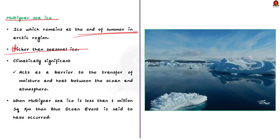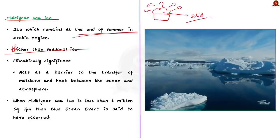Imagine you have a bowl of ice cream on a hot summer day. As the ice cream melts, it releases coldness into the surrounding air, making it cooler. The scoop that remains solid even after the other ice creams have melted acts like multi-year sea ice. It is thicker and takes longer to melt. It continues to release coldness and helps maintain a cool environment for a long time. Similarly, multi-year sea ice acts as a barrier that prevents excessive heat transfer between ocean and atmosphere, thus stabilizing the climate.